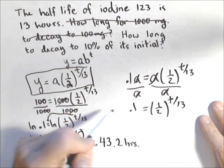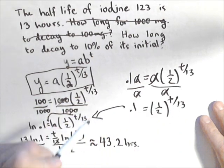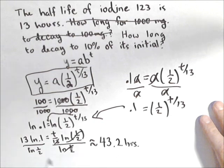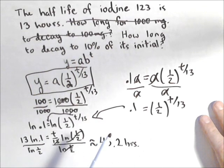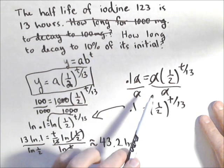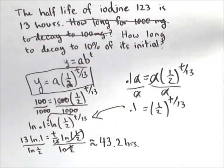That should look familiar. That was the same problem we just solved. So there's two different ways of asking the question. One, they could give you the initial and ask how long it takes to go down to a certain amount. Or they could just say how long until a certain percent is left, because there is actually enough information in that case.